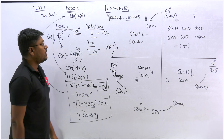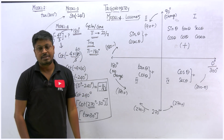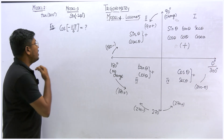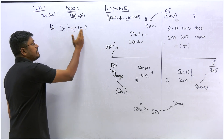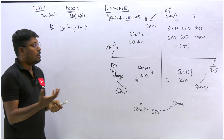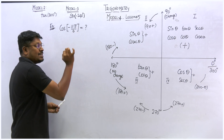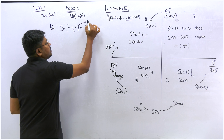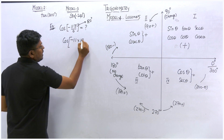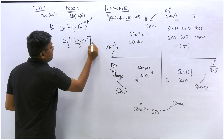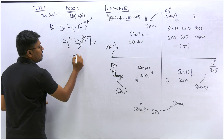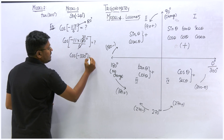Here is another example question on model 4: cos of minus 11 pi by 6. By seeing pi in the question you know it is model 4. The first step is to convert pi to 180: write it as cos of minus 11 times 180 divided by 6. Cancel 180 by 6 to get 30, so this becomes cos of minus 330 degrees.